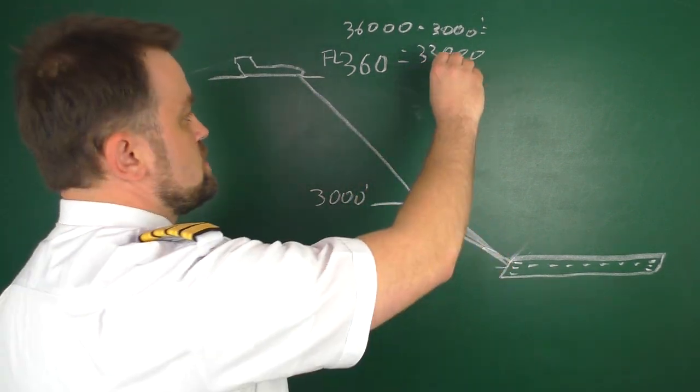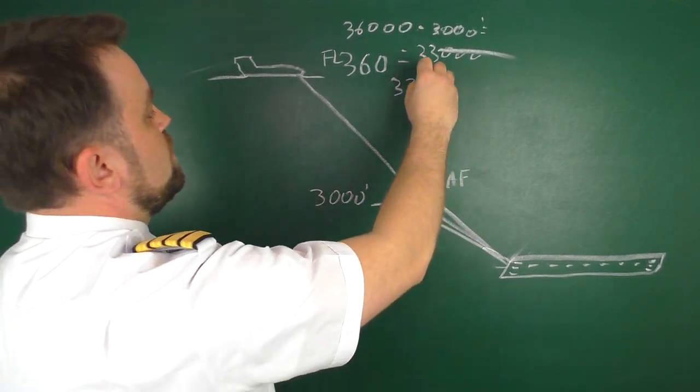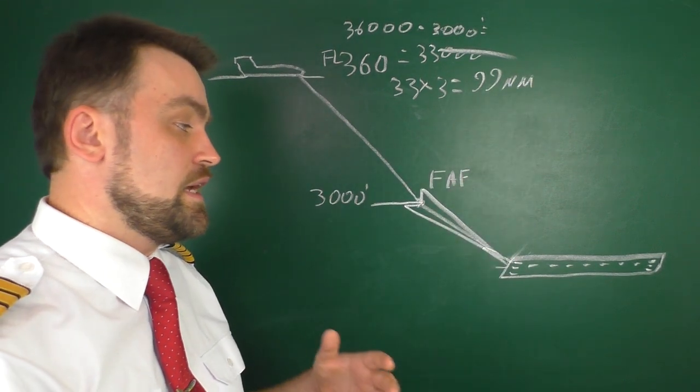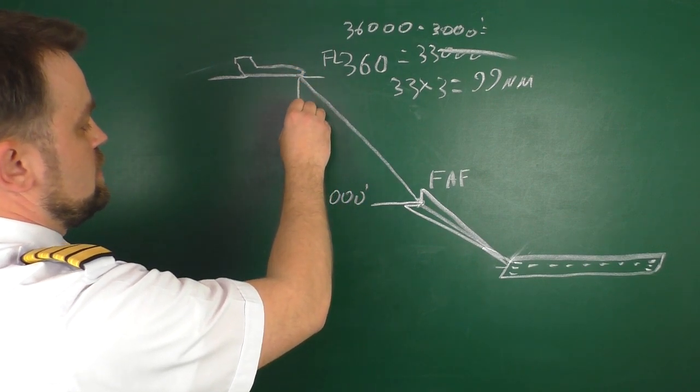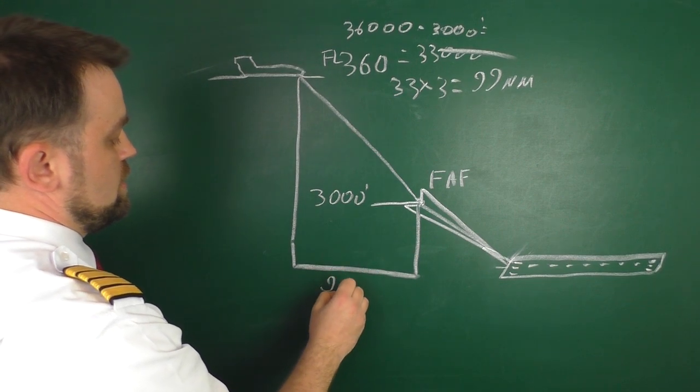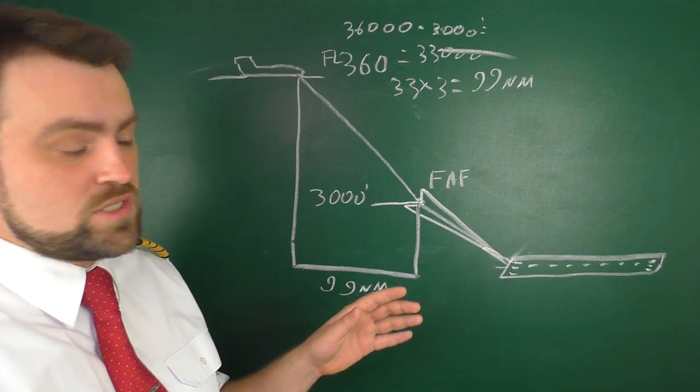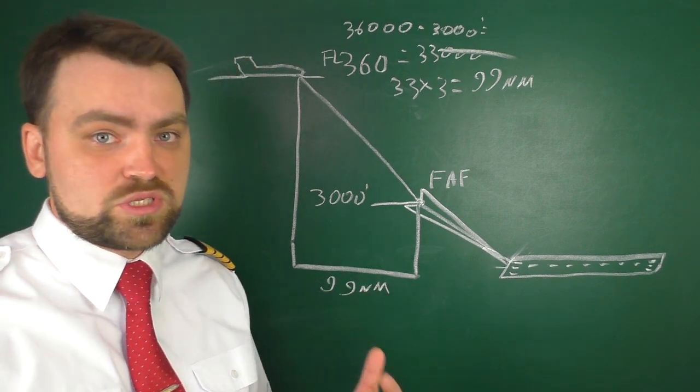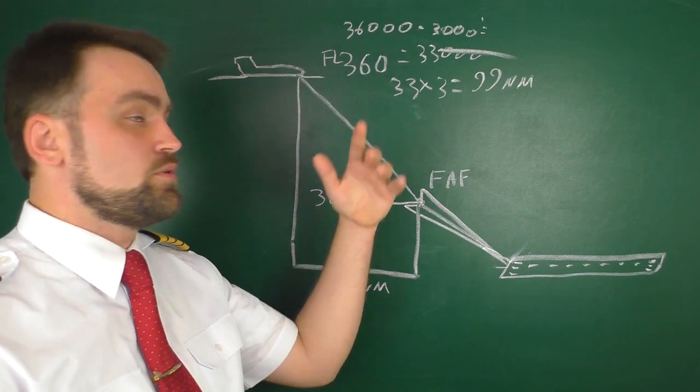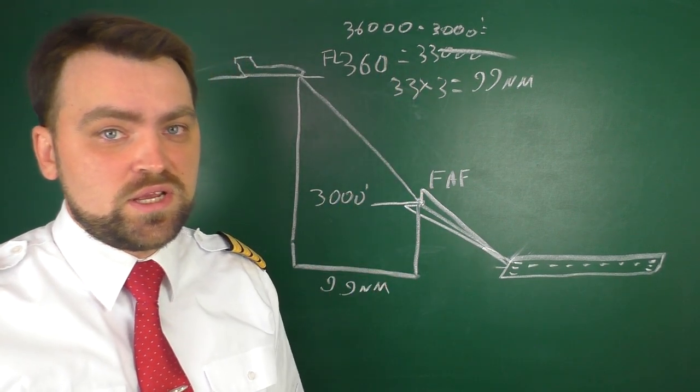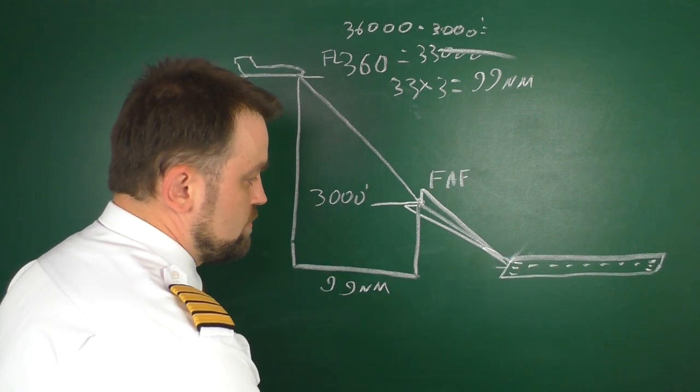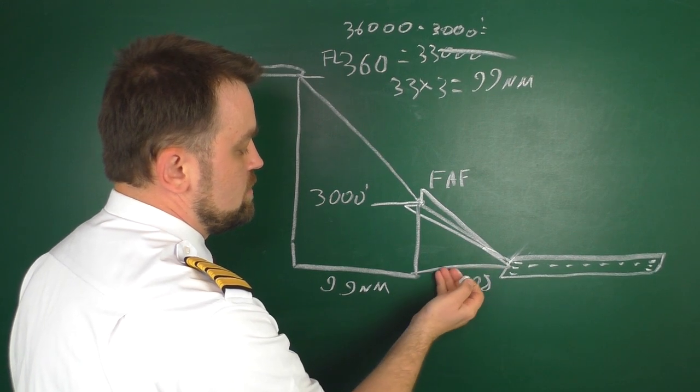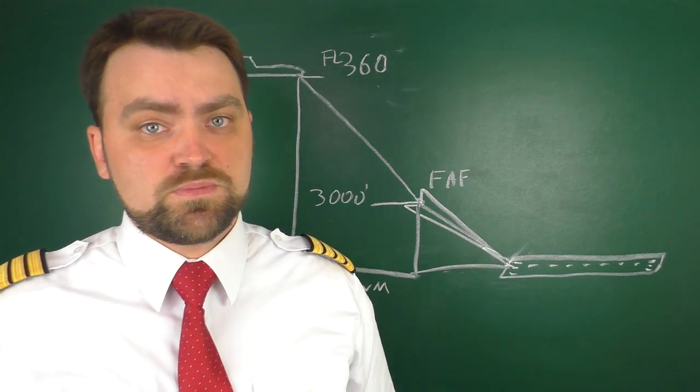Now we need to get rid of those zeros, and we have 33. We need to multiply by three, and that equals 99 nautical miles. So we need to start our descent in ideal conditions with no wind 99 nautical miles from this point. You just set this point in your flight management computer, press direct, and check that you have 99 nautical miles. You may also check it on the progress page of your FMS. Basically, multiply your flight level by three, get rid of this zero, and you have your distance to your final approach fix or to your touchdown.